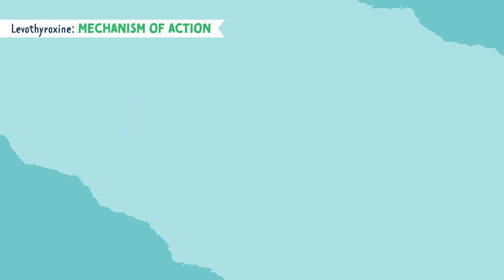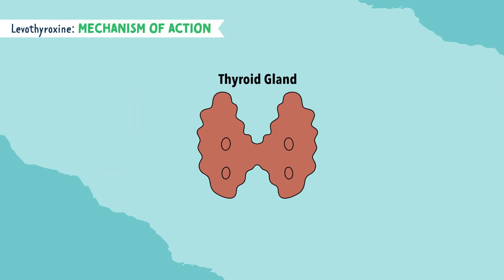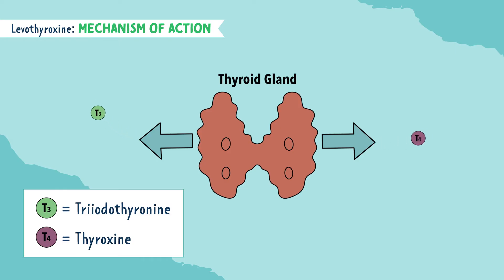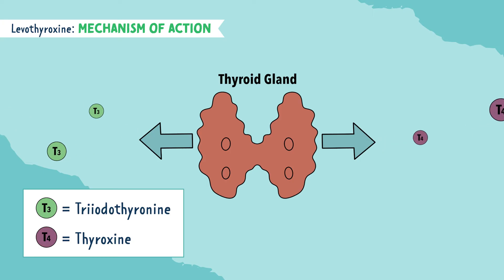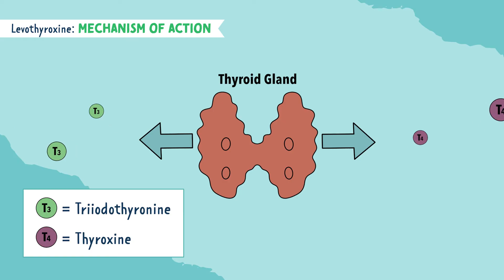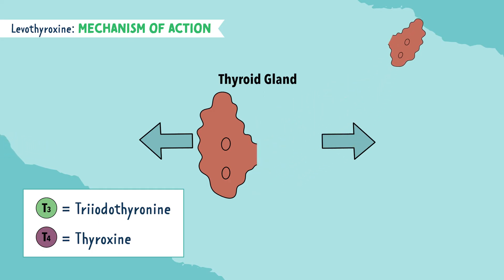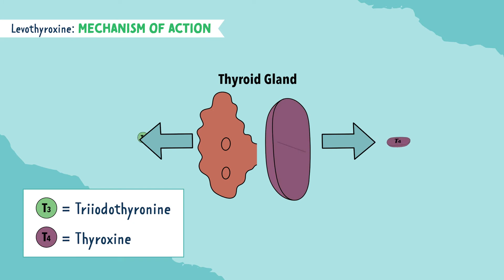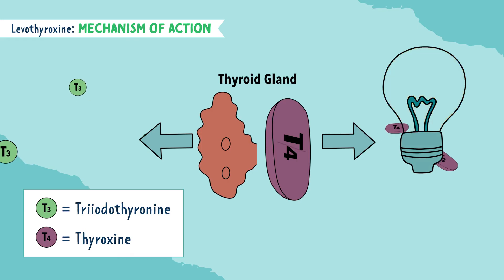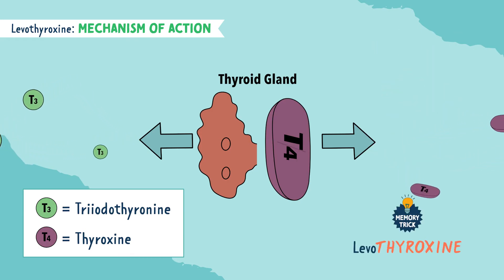Let's talk about the mechanism of action. The thyroid gland produces hormones such as T3, aka triiodothyronine, and T4, aka thyroxine. But remember, in hypothyroidism we have low levels, and after a thyroidectomy we might have no levels because we took the thyroid out. So levothyroxine replaces or mimics the hormone thyroxine, also called T4. This is easy to remember because thyroxine is literally spelled out in the medication name — levothyroxine.